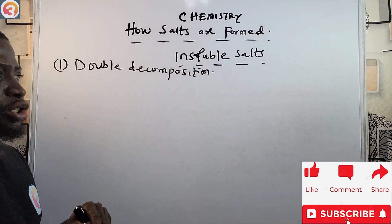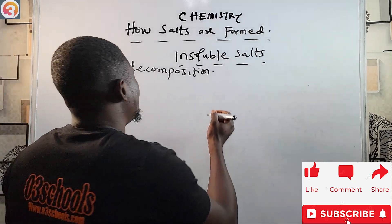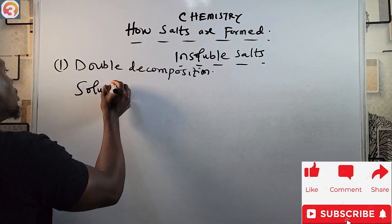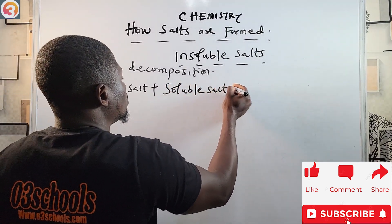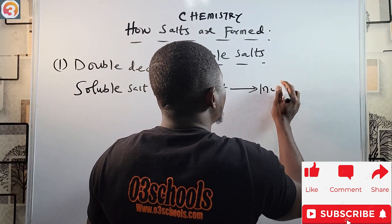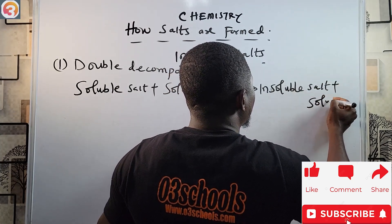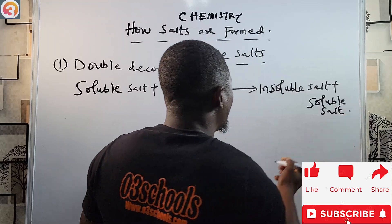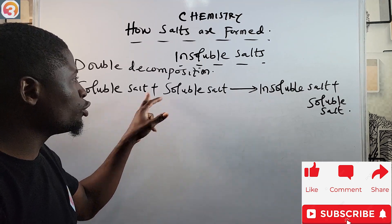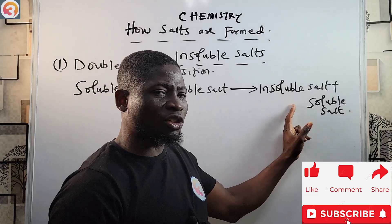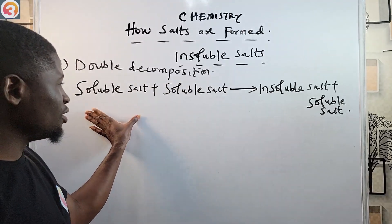Double decomposition is one method we can use to prepare insoluble salts. Generally, double decomposition is represented as: soluble salt plus soluble salt gives insoluble salt plus soluble salt. This means we are reacting two soluble salts together and getting one insoluble salt and one soluble salt as products.